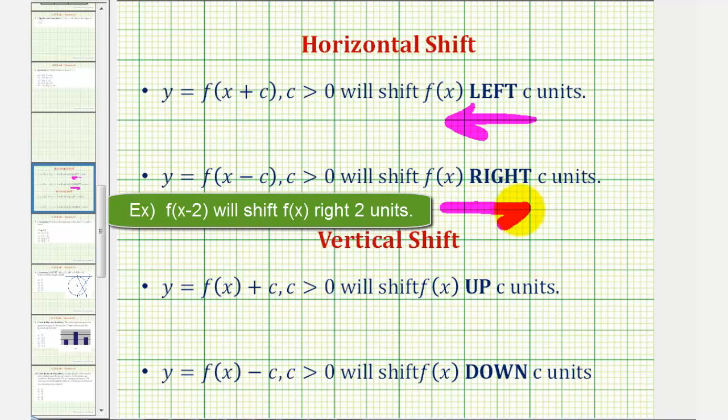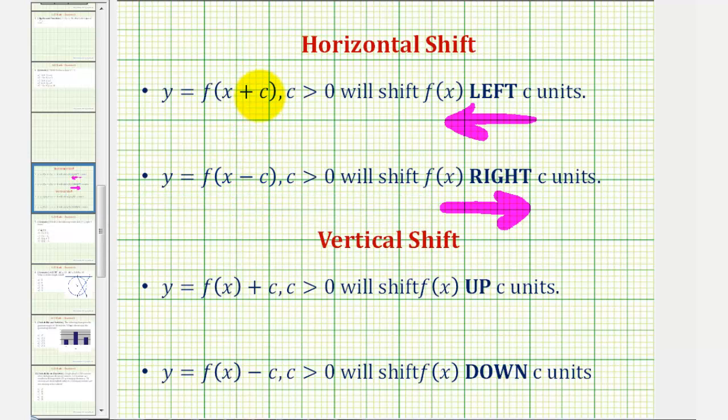then the graph would be shifted right. Again, the opposite direction that we might think because we're subtracting a constant from the input. But notice how if we have plus or minus c inside the parentheses or part of the input, then the graph is shifted left or right. Remember, our question talks about a shift right, so we're looking for a function in the form of f of the quantity x minus a constant.